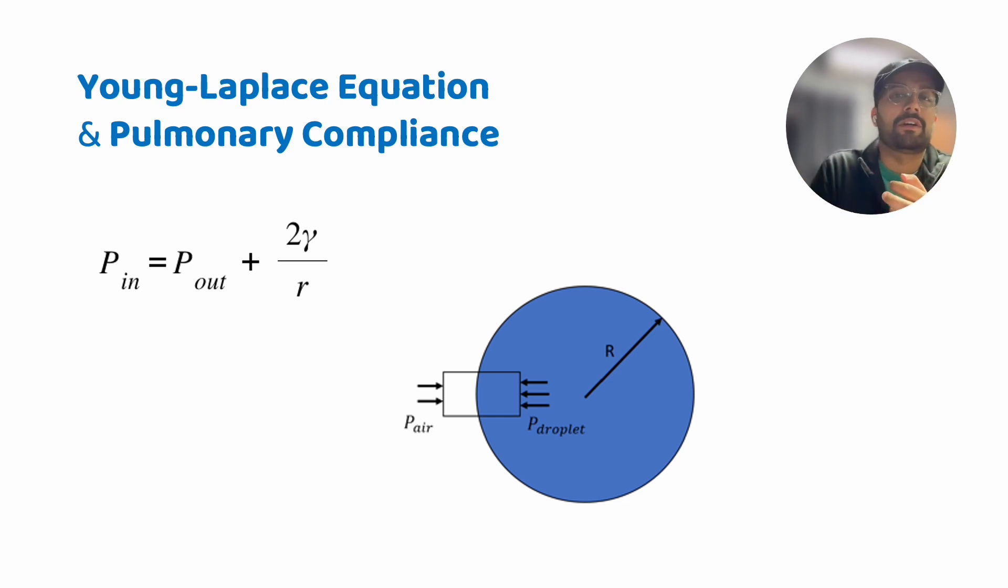When we first talk about this equilibrium, we have to follow a mathematical model which is closely resembling the Young-Laplace model which suggests that the pressure inside the alveoli, or more precisely the gas pressure inside the alveoli, must be greater than 2 gamma by R parameter where gamma is the surface tension.